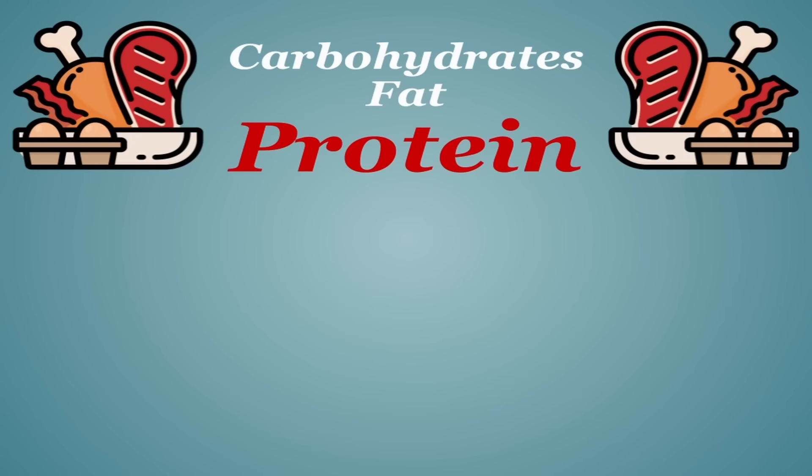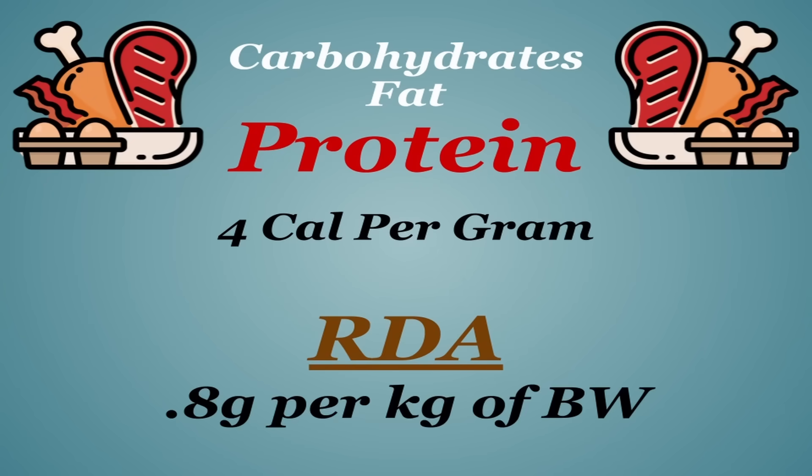Protein is one of the three main macronutrients, contributing four calories per gram. The recommended daily allowance for protein is 0.8 grams per kilogram of body weight, but realistically, this can and should vary wildly depending on your build and goals.